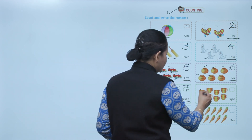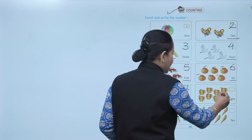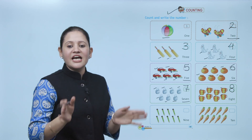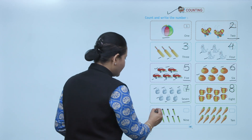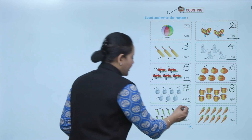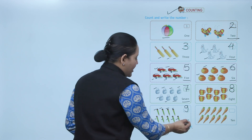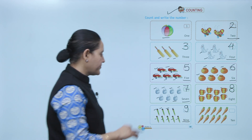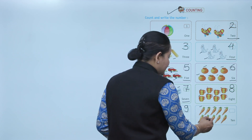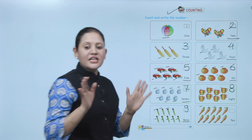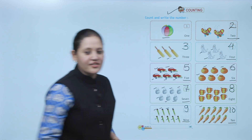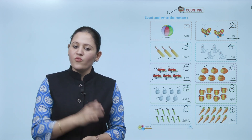How many cups? One, two, three, four, five, six, seven, eight — eight cups, write here number eight, E-I-G-H-T. How many pencils? One through nine — write here number nine, N-I-N-E. How many carrots? One through ten — total ten carrots, one-zero, T-E-N. So here we have done counting from one to ten.